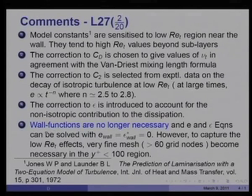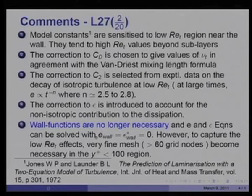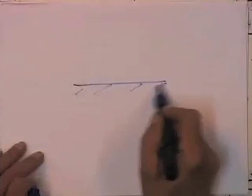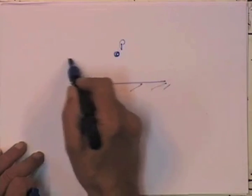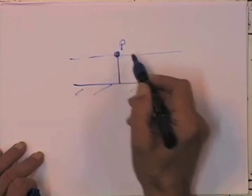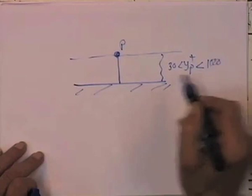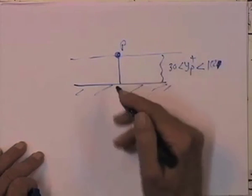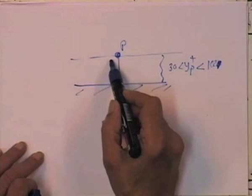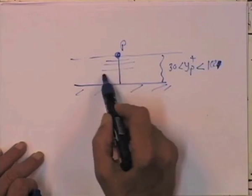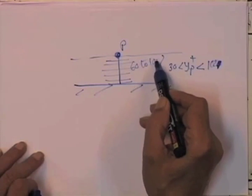Since we are now able to go right up to the wall, wall functions are no longer necessary — we will not use the universal law of the wall at all. The k and epsilon-star equations can be solved with k_wall = epsilon-star_wall = 0. To capture the effects of low turbulence Reynolds number in the region between the wall and the first node, as many as 60 to 100 grid nodes will be required to capture the very sharp velocity variations.